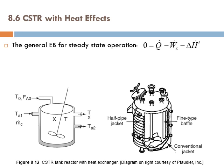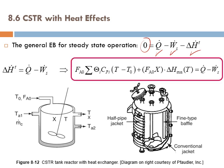The general energy balance for steady state operation: under steady state, accumulation equals zero. The balance reduces to: input minus output through heat, minus work terms, minus the enthalpy associated with mass flow coming in and leaving. We can rearrange this to get a simplified energy balance equation.